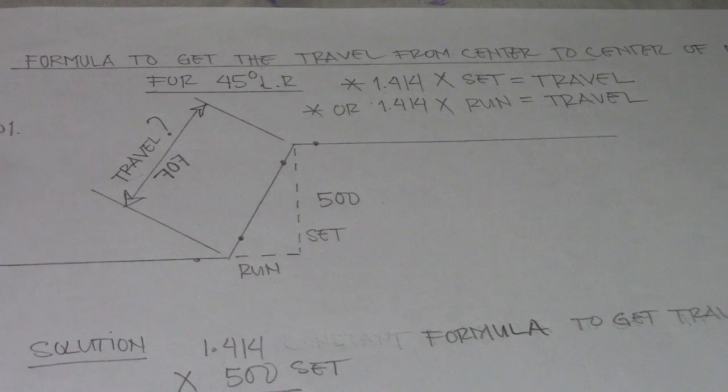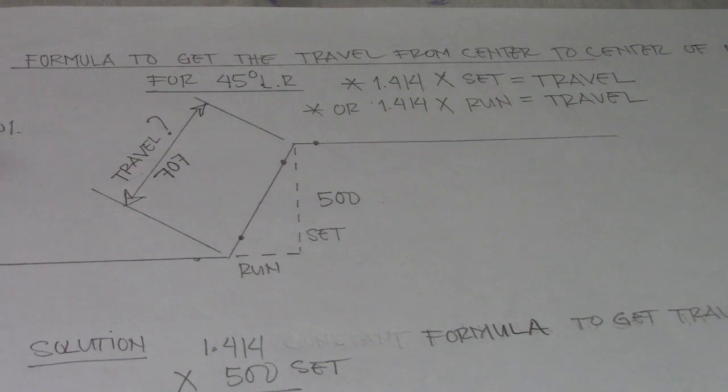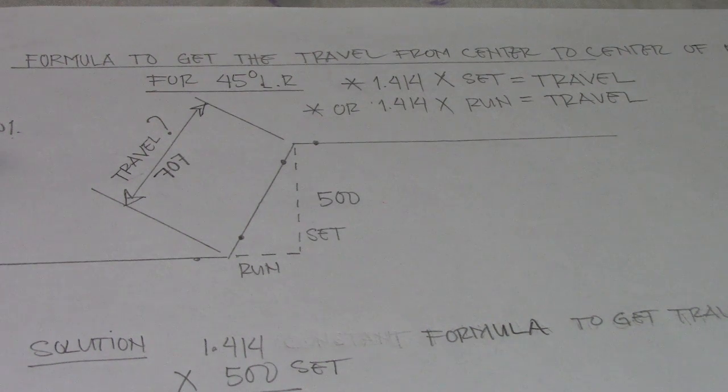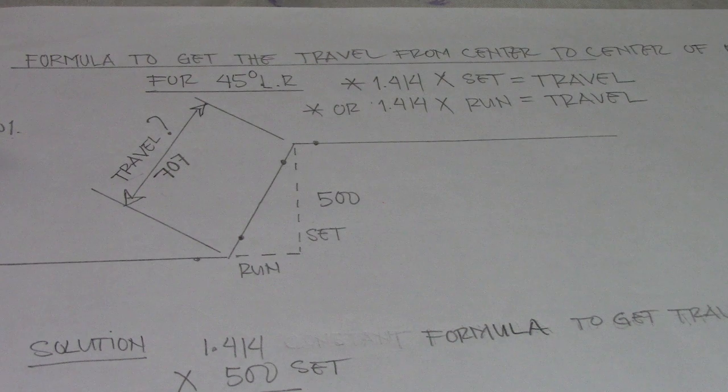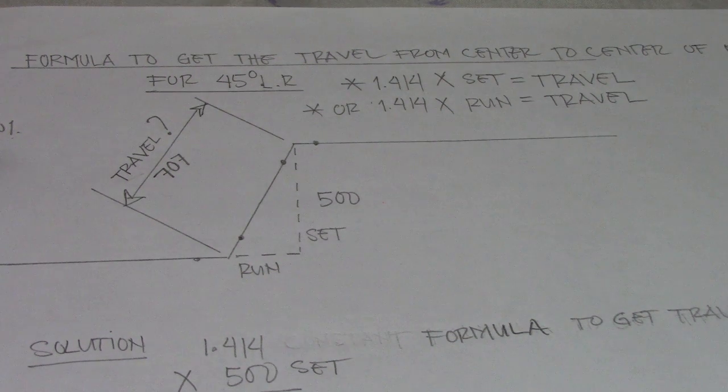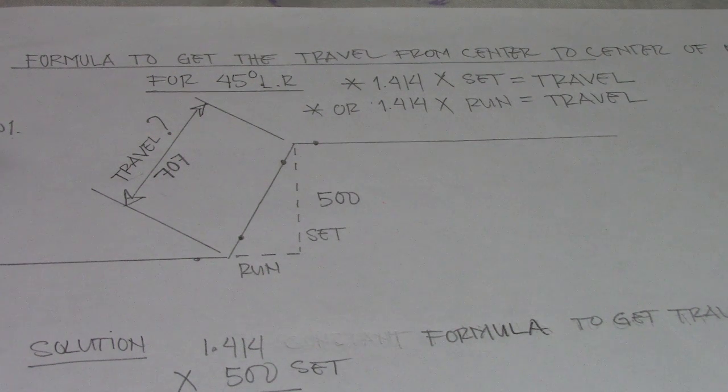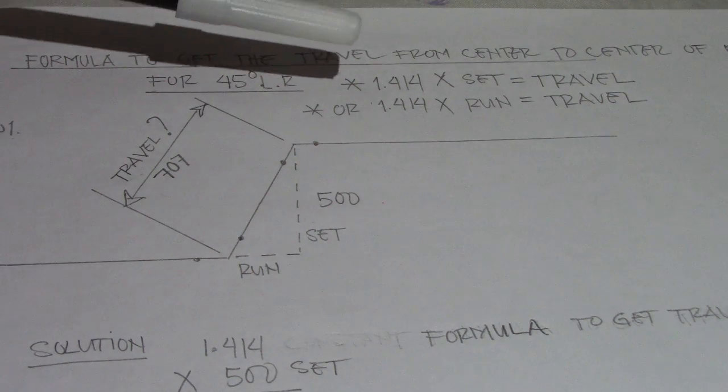We have 500 from set, so we will use the formula of 1.414. This is the only way to get that travel. You can use 1.414 for easy calculation - just multiply 1.414 by the set equals travel.